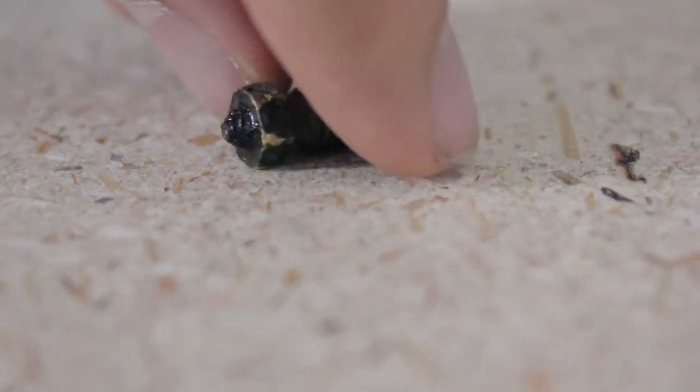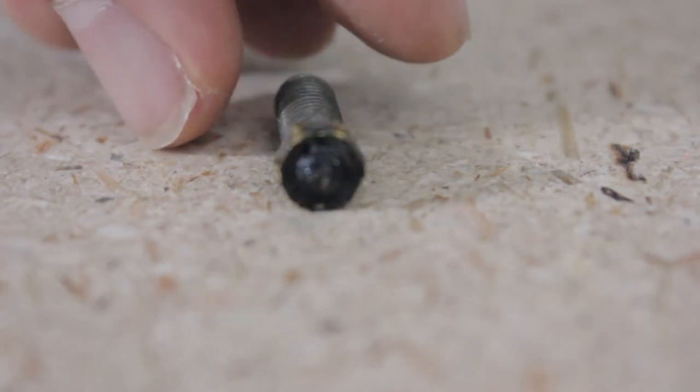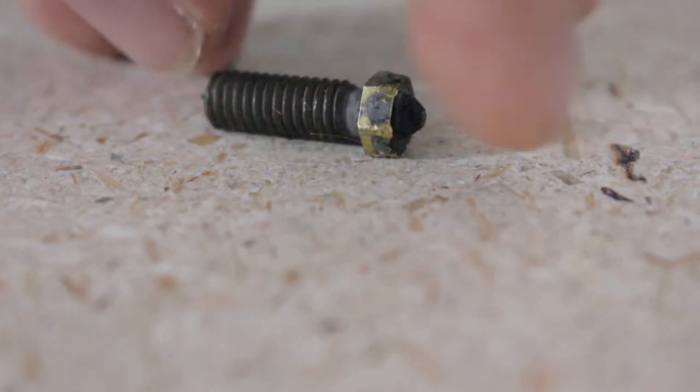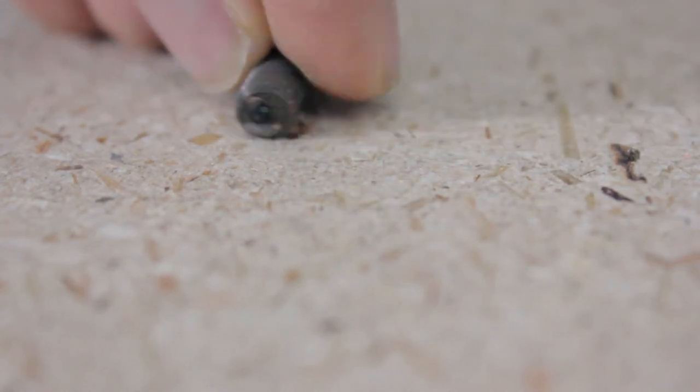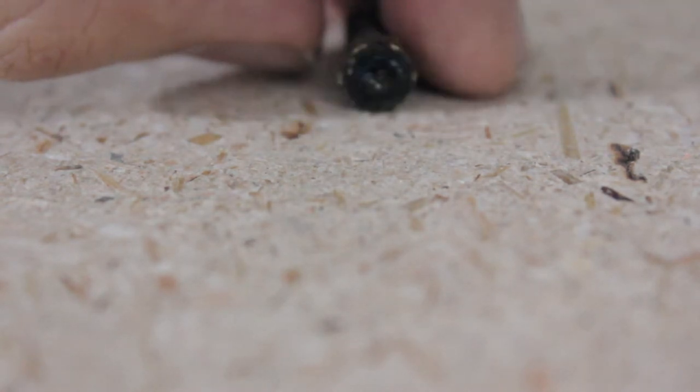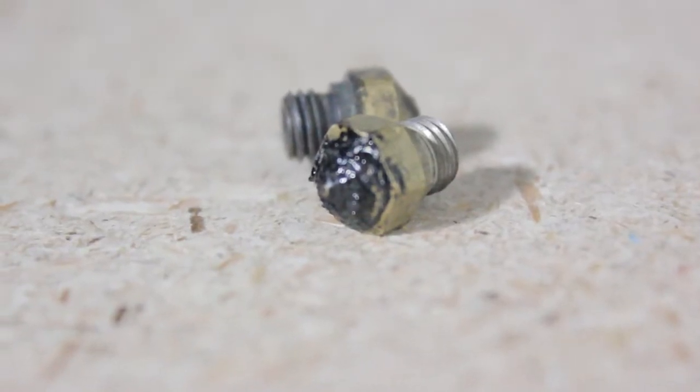Everyone no doubt has nozzles that look like this - dirty, with caked on burnt plastic and likely clogged. Normally when nozzles look like this you chuck them, but I'm going to show you in this video how you can save hundreds with this very simple method.